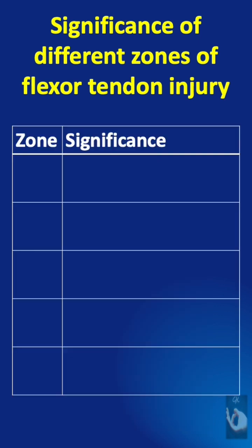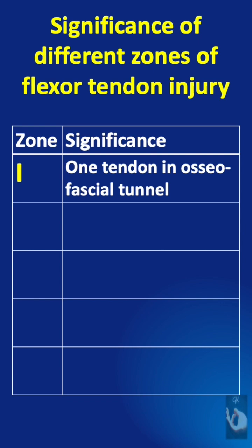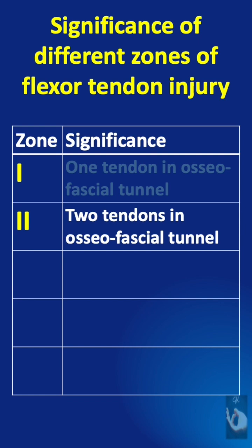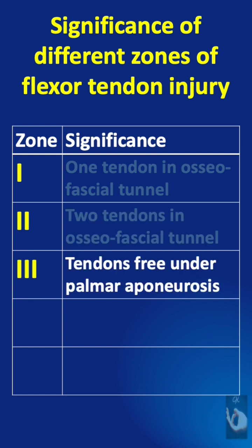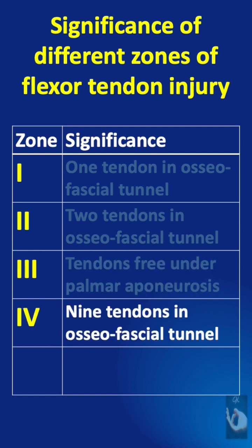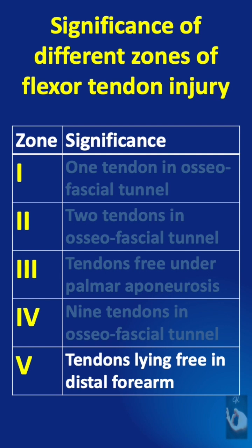The need for such a classification is because surgically, when there is an injury to the tendons, each zone has a characteristic. Zone 1 represents injury to one tendon in an osteofibrosal tunnel. Zone 2 represents two tendons in a tight osteofibrosal tunnel. Zone 3 represents tendons under the palmar aponeurosis and relatively free. Zone 4 represents nine tendons in an osteofibrosal tunnel, and Zone 5 represents tendons lying relatively free in the distal forearm.